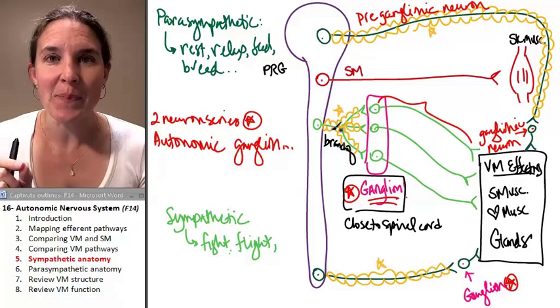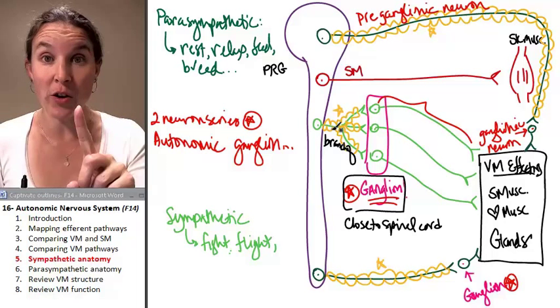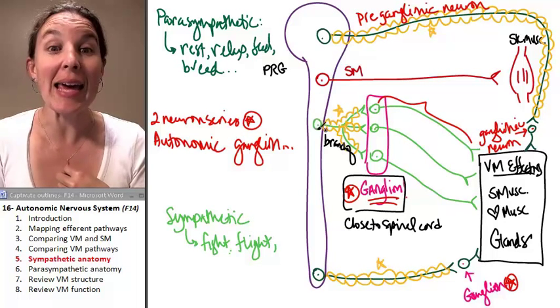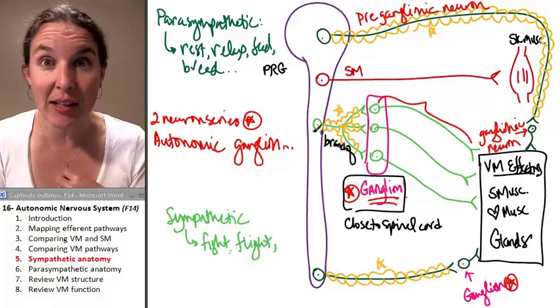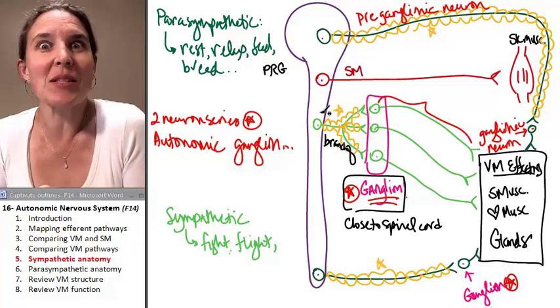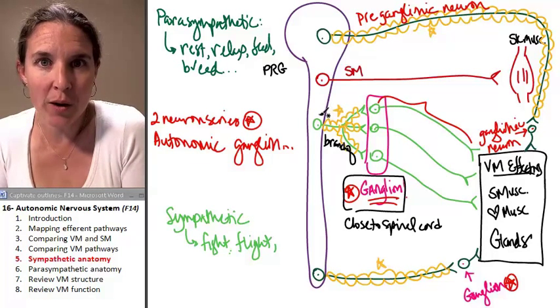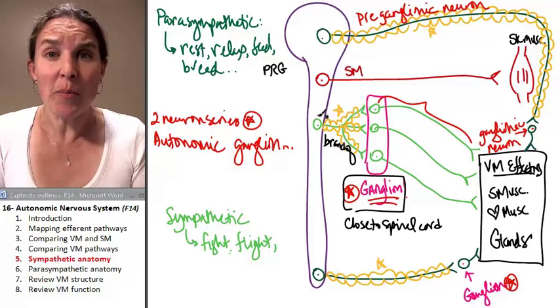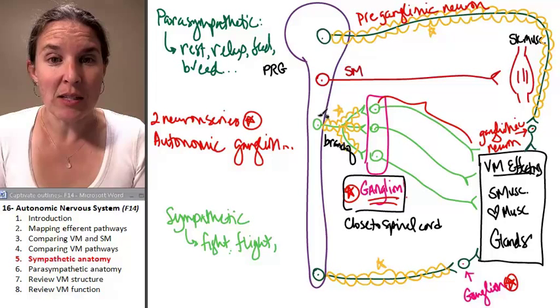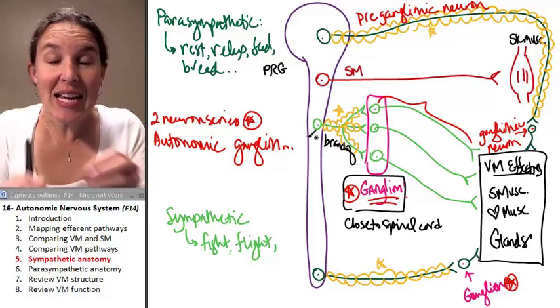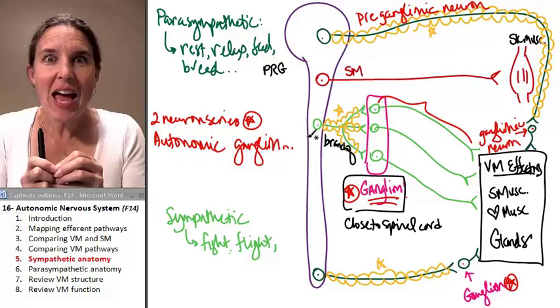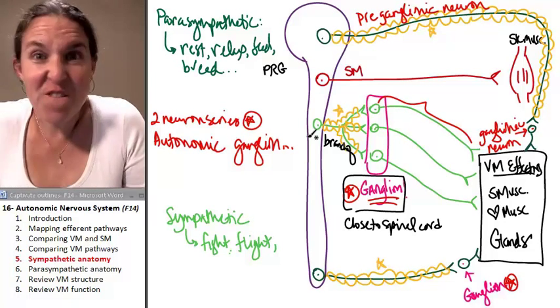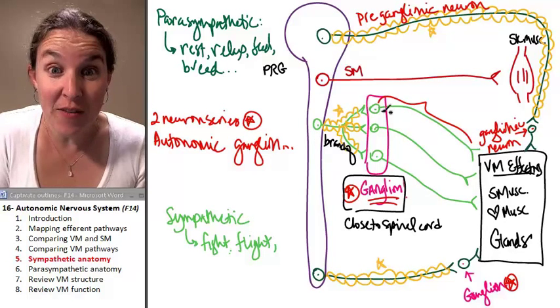One way to do that is activate one neuron. Here's my one neuron, my one preganglionic neuron whose cell body was in the lateral gray horn. Just tell one of those guys, hey, there's a bear over there. Let's do something about this. And that one is now the foundry, it's the pyramid scheme. That one is calling like 50 others.